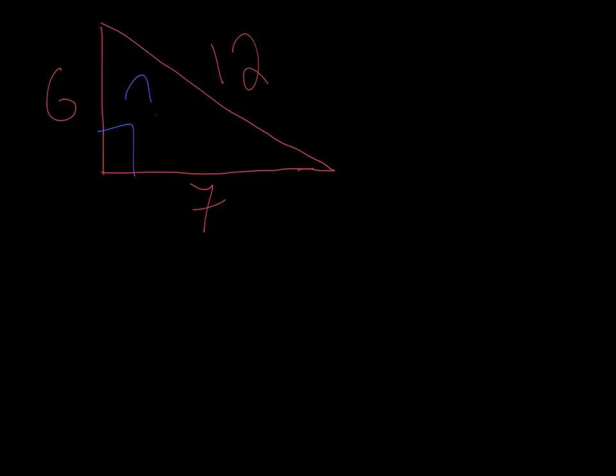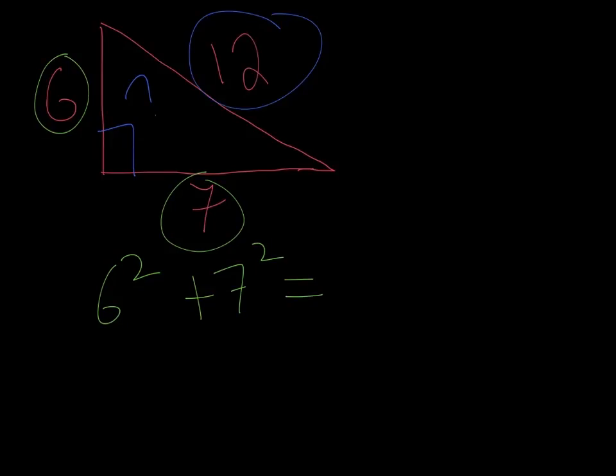Well, I can take these sides and plug them into the Pythagorean theorem. Right here I have my legs, so I would take 6 squared plus 7 squared and I would set that equal to my hypotenuse squared. So I take 12 squared.